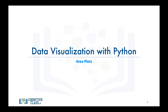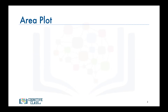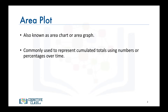In this video, we will learn about another visualization tool: the area plot, which is actually an extension of the line plot that we learned about in an earlier video. An area plot, also known as an area chart or graph, is a type of plot that depicts accumulated totals using numbers or percentages over time. It is based on the line plot and is commonly used when trying to compare two or more quantities.